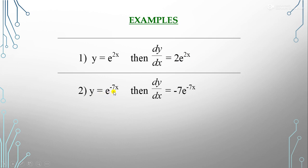Another example: if y = e^(-7x), then dy/dx = -7e^(-7x), because the coefficient of x is -7, which comes forward. We know that the differentiation of e^x is e^x.